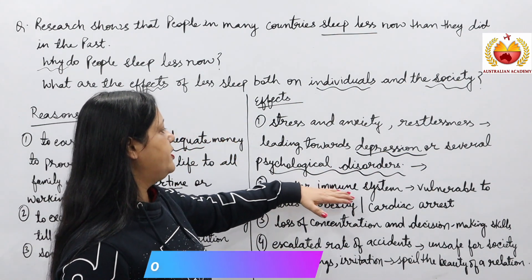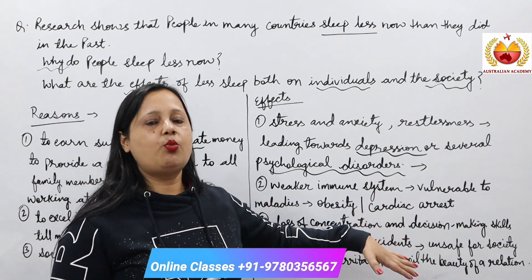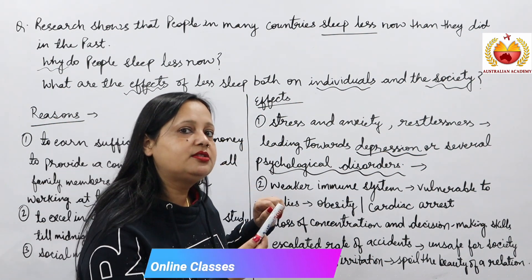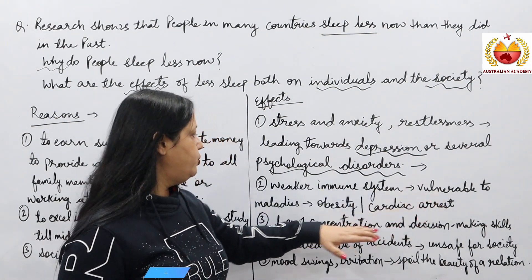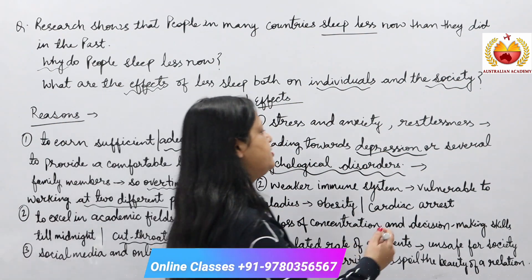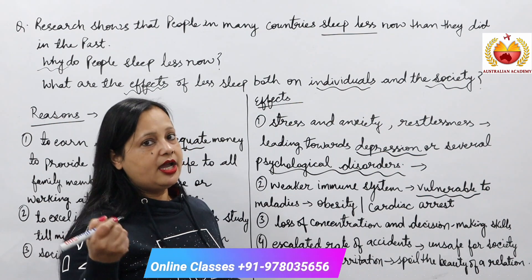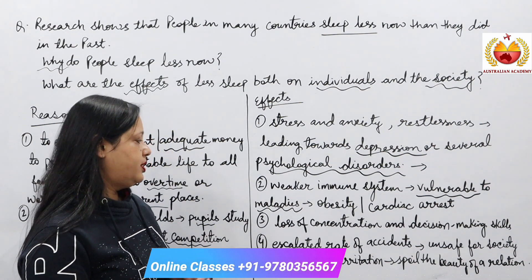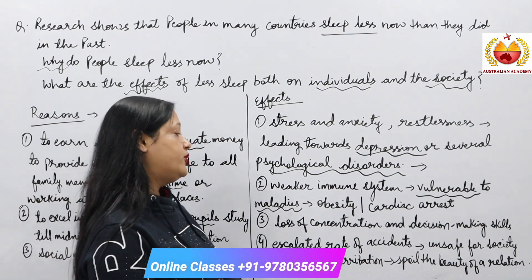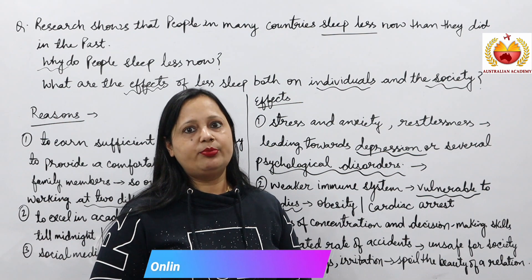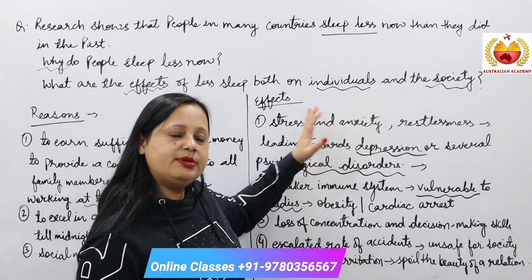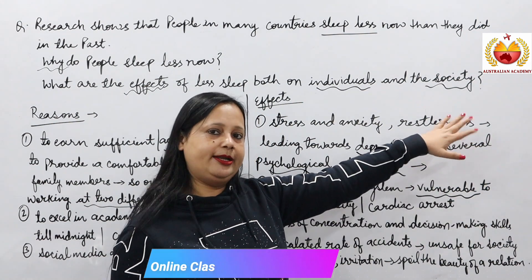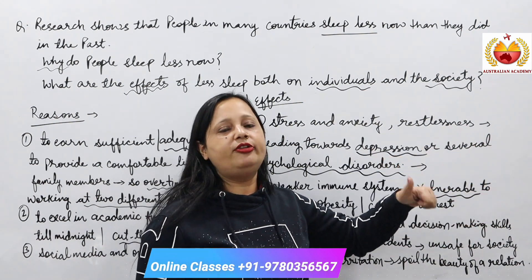The second individual effect is a weaker immune system. Immunity builds up when we are sleeping and resting sufficiently, so lack of sleep means a weaker immunity system. The person becomes vulnerable to diseases — prone to maladies and ailments such as high blood pressure, obesity, and cardiac arrest. So both psychological and physical problems occur because of lack of sleep.